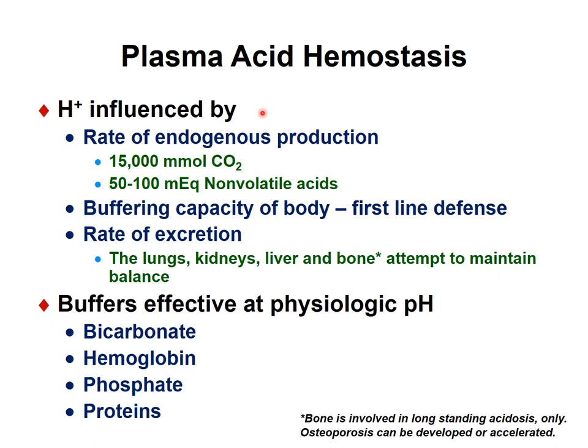The acid-base balance is influenced by the production and elimination of hydrogen. The production rate depends on endogenous processes — such as aerobic conditions where we burn carbon moiety to carbon dioxide, producing about 15 mol of CO2 as a volatile acid — as well as substances like sulfur-containing amino acids, amino groups, and phospholipids, which produce non-volatile acids during metabolic processes.